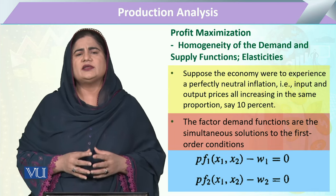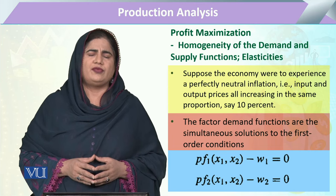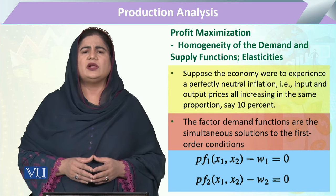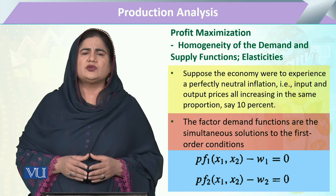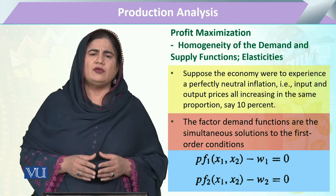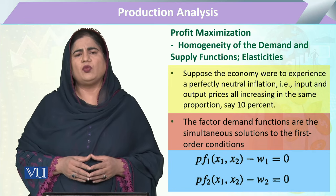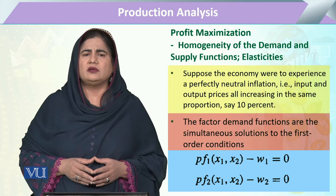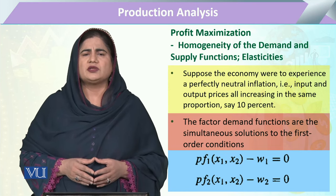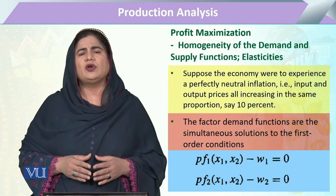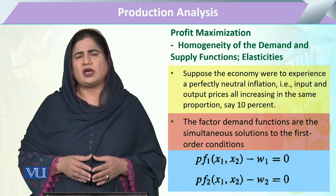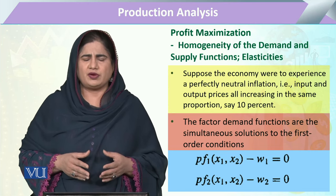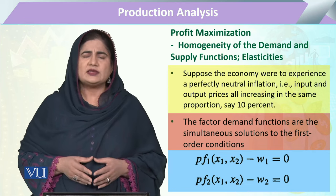We have already studied that the supply of any firm depends upon the factor prices as well as the output price. We are always having various functions — there will be one output supply function and, depending upon the prices of input, there will be a cost function. When we utilize these two, we can have the output function, the revenue function, and the profit function.